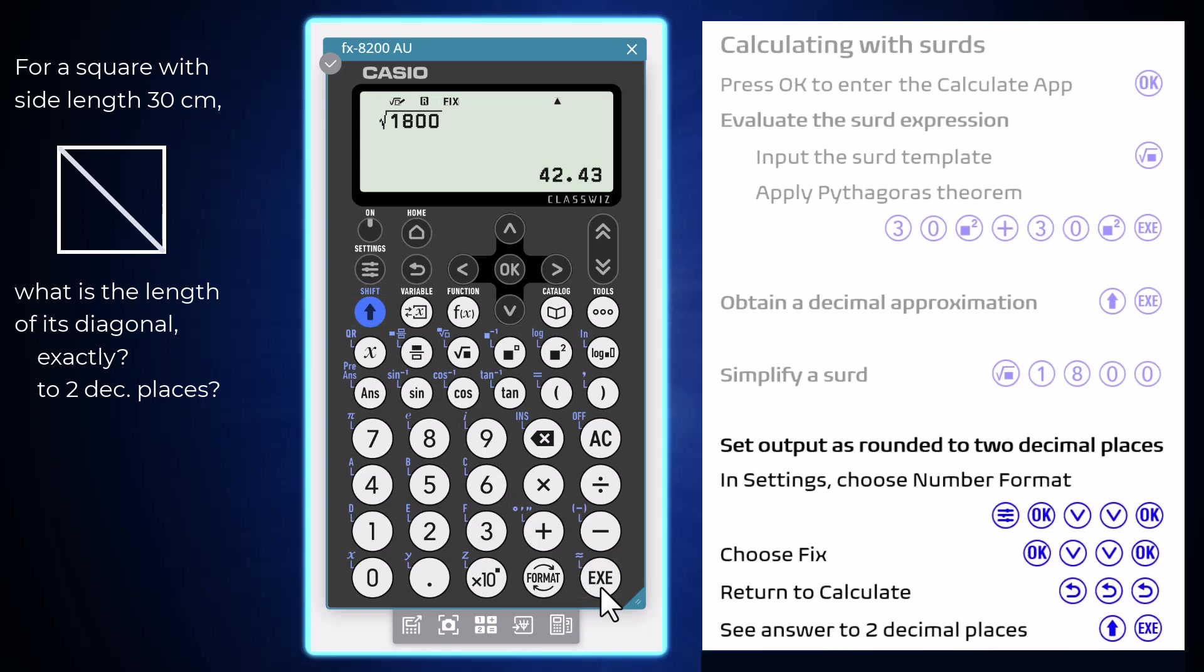Note, this choice of number format will remain until the user selects otherwise. The default, norm 2, is the most useful for general calculations.